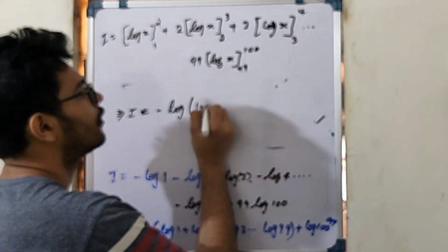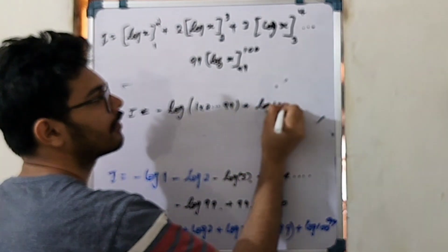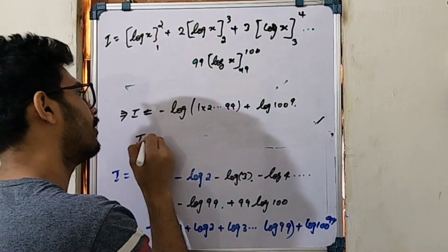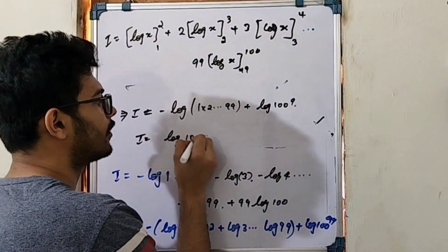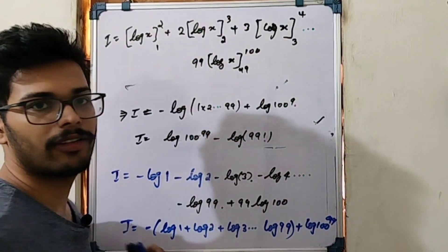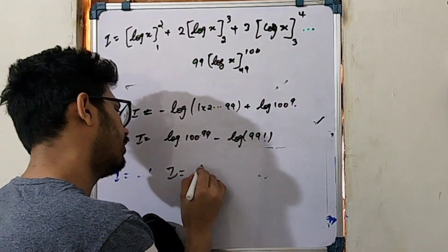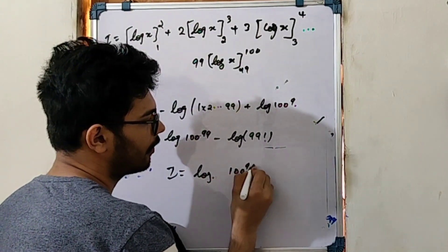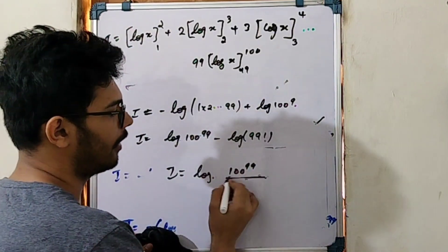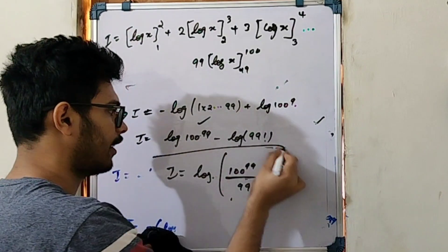We see log 100 raise to 99 and log 99 factorial. Log 99 factorial equals log 100 raise to 99 minus log 99 factorial. Using log a minus log b equals log(a/b), i equals log of 100 raise to 99 divided by 99 factorial. Here we can see the final answer.